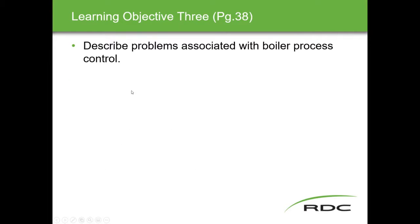That covers the control strategies: pressure control, temperature control, level control, and furnace pressure control. Now we move to problems associated with boiler process control. Problems can range from very serious to efficiency issues.